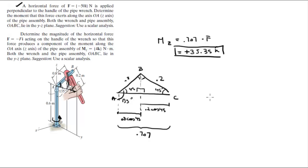The second one: determine the magnitude of the horizontal force F acting on the handle so that its force produces a moment of 4k. So look at this formula right here, M_z is equal to 0.707 times F. If M_z is given at 4 kilonewtons,